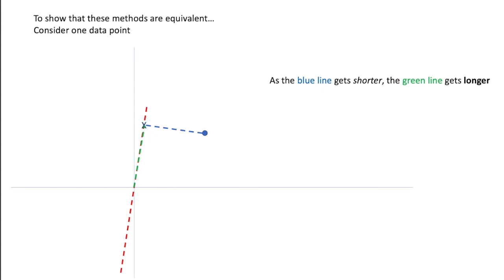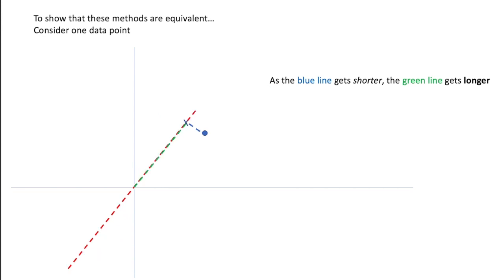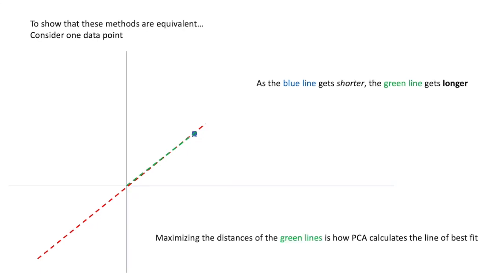To show that minimizing the blue lines and maximizing the distance of the green dashed lines are equivalent, let's consider one data point. As the line of best fit gets better and better, the blue line will get shorter and the green line will get longer. At the line of best fit for this single data point, the blue line has totally vanished and the green line is at its maximum distance. PCA actually works by maximizing the distance of these green dashed lines — the distance between the origin and our projected data point on the line of best fit. The math is much simpler to calculate this distance rather than the distance between each individual data point and its projected point on the line.